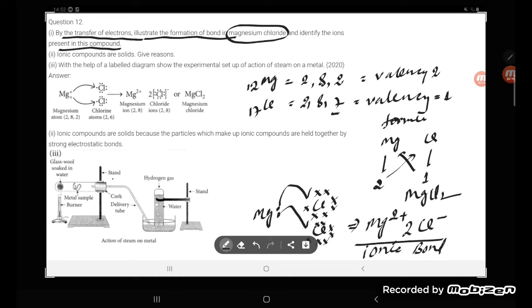Ionic compounds are solid. Give reason: Ionic compounds are solid because the particles which make up ionic compounds are held together by ionic